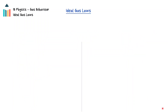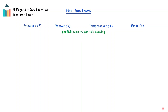The bulk properties of pressure, volume, and temperature for an ideal gas are related through a series of gas laws. In each of these relationships for a fixed mass of gas, one or more of these properties is kept constant. Note that for ideal gases, one of the assumptions is that the size of the particles themselves have no impact on the volume of the gas, because the size of the particles are very small relative to the spaces between them.